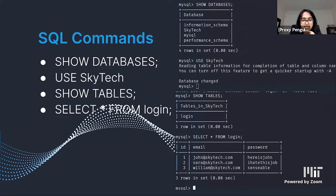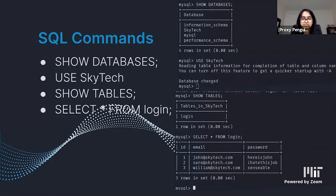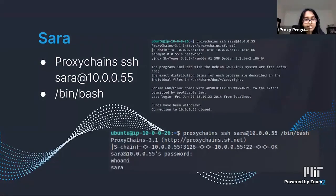We needed to figure out a way to access Sarah's password. We used 'show databases' and then looked into SkyTech. Using 'show tables,' we found a table called login. We selected all the information and got the table of all usernames and passwords on SkyTech. After getting Sarah's password, we were able to log into her account, but immediately lost connection — same as with John. We added /bin/bash to the proxy chains SSH command to get a shell in Sarah's account.